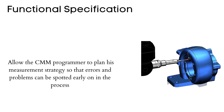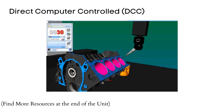The purpose of the functional specification is to allow the CMM programmer to plan his measurement strategy so that errors and problems can be spotted early on in the process. Many software packages contain an automatic feature measurement function that allows the CMM to automatically move to a defined feature and take measurement points on it, facilitating the creation of a direct computer-controlled program.